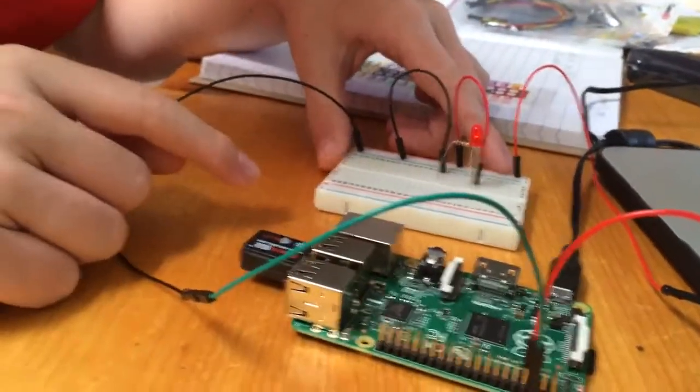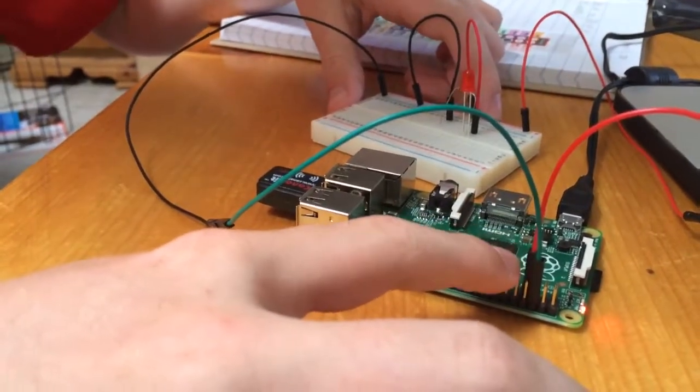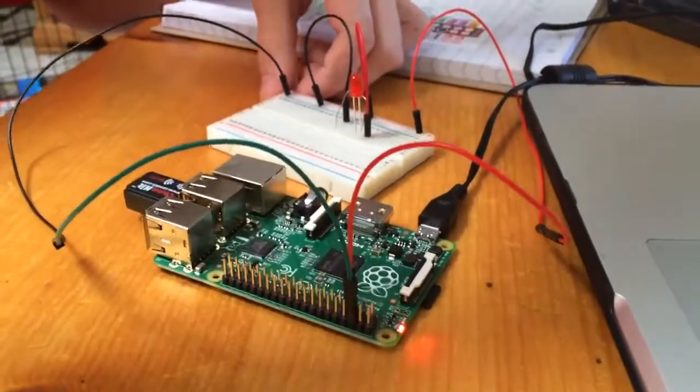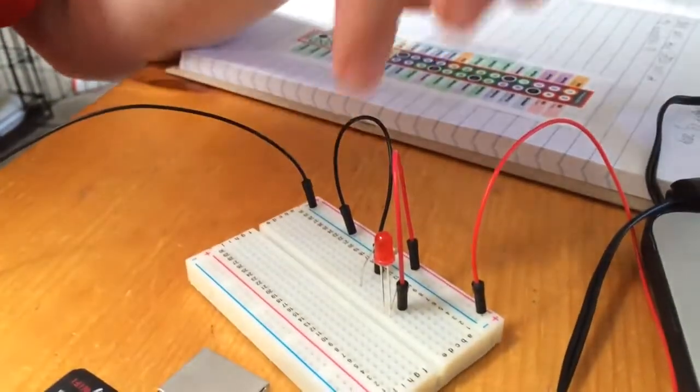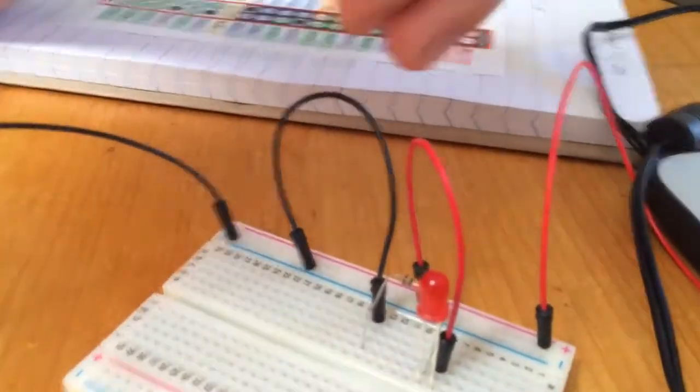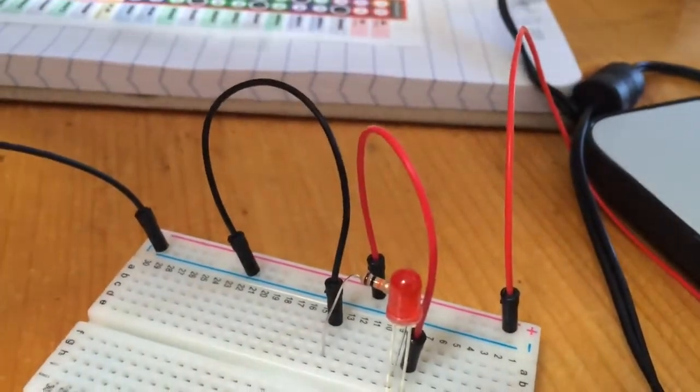So I'll explain the circuit now. From pin 7, which is the general purpose input-output pin on the Raspberry Pi, we put an output. That output goes to the positive end of the LED, and then from the negative end it goes to a 50 ohm resistor, which then goes back to the ground pin on the Raspberry Pi.